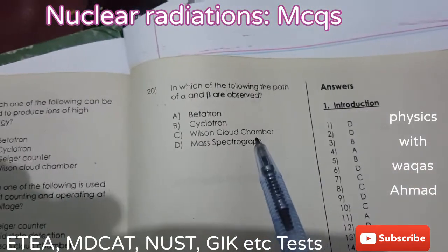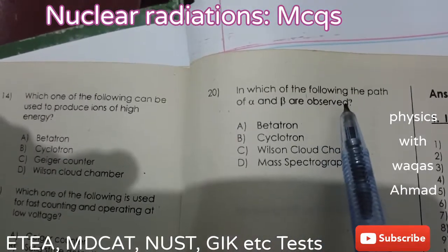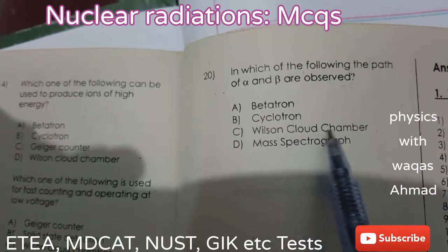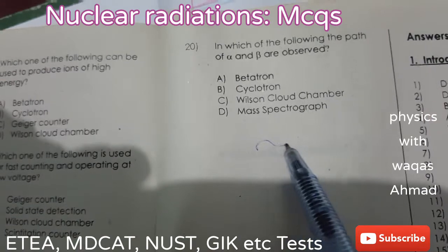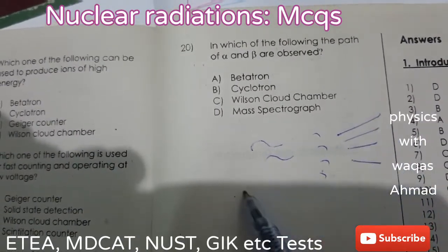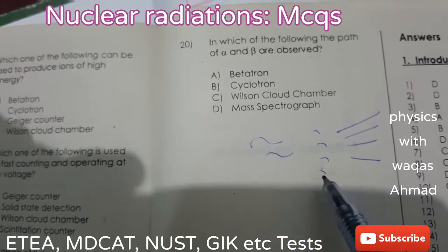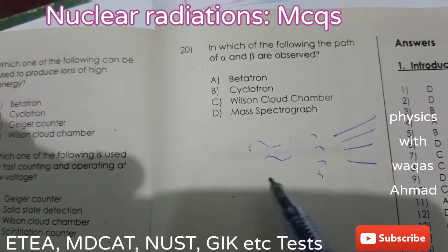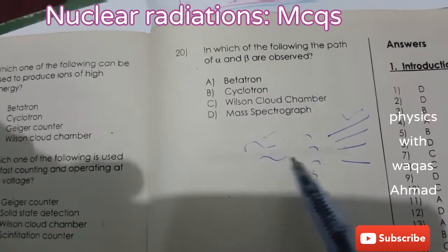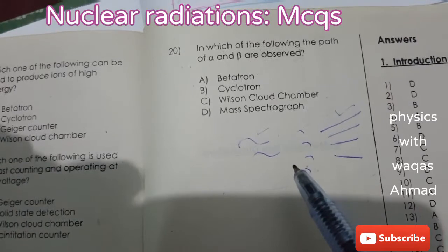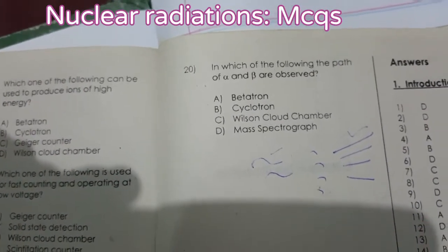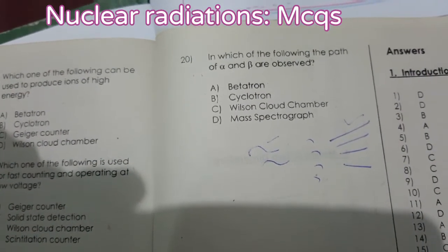The last MCQ: in which one of the following are the paths of alpha and beta particles observed? The paths of alpha and beta particles are observed in a Wilson cloud chamber. In this chamber, tracks are produced — straight tracks that indicate which kind of particles enter the chamber. We can determine their path and nature, whether gamma rays, alpha particles, or beta particles, depending on their ionization ability. So option C is correct. Thanks for your time — subscribe for upcoming videos related to nature and physics.